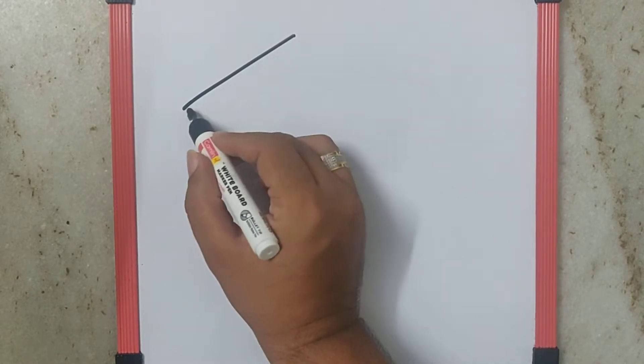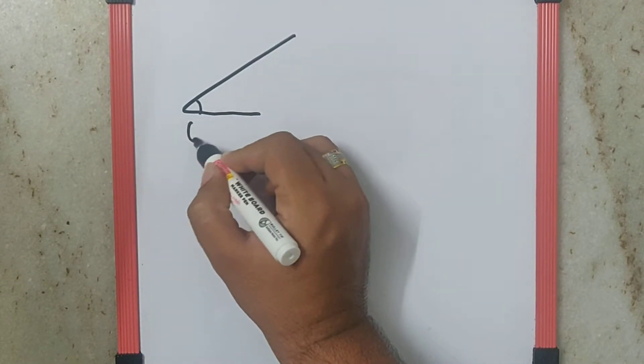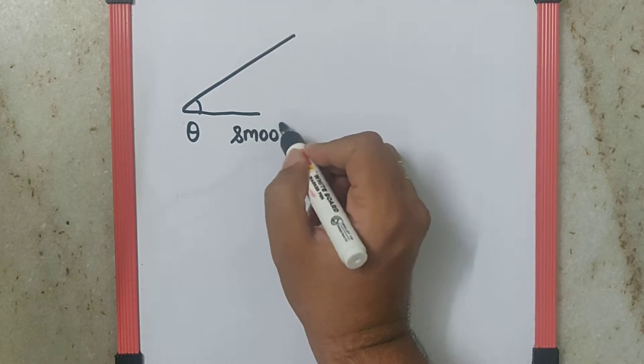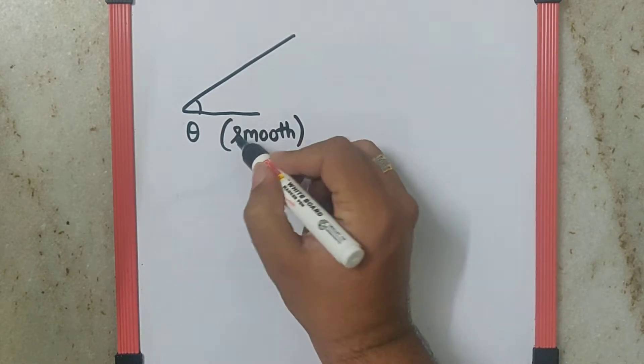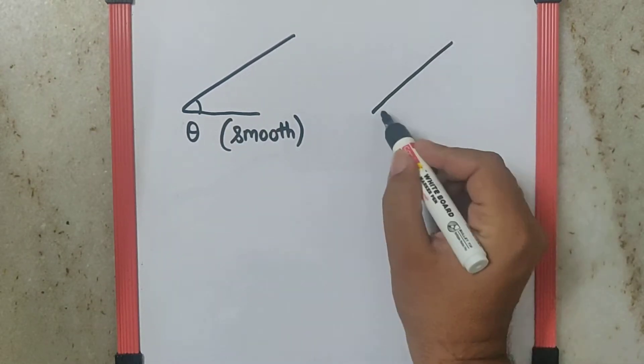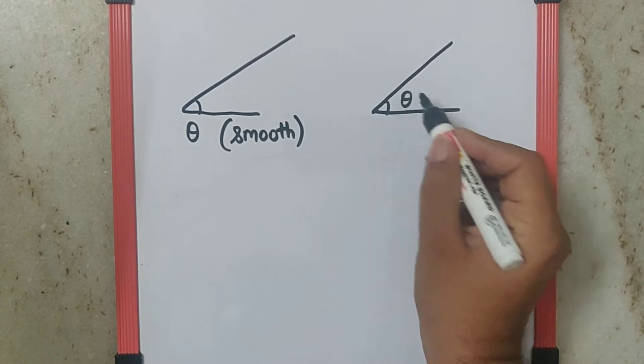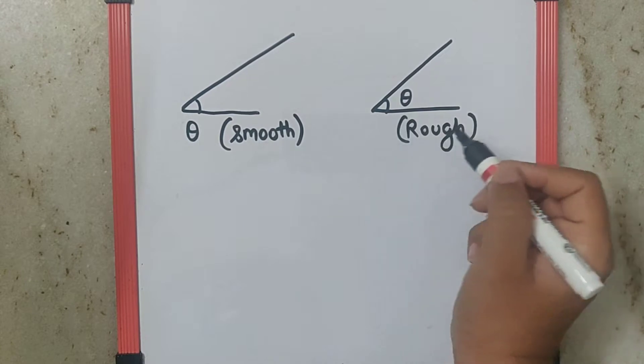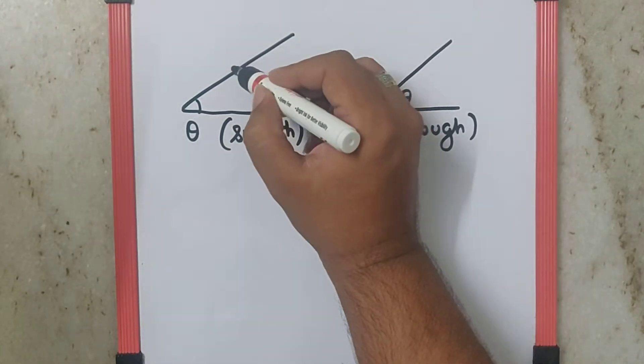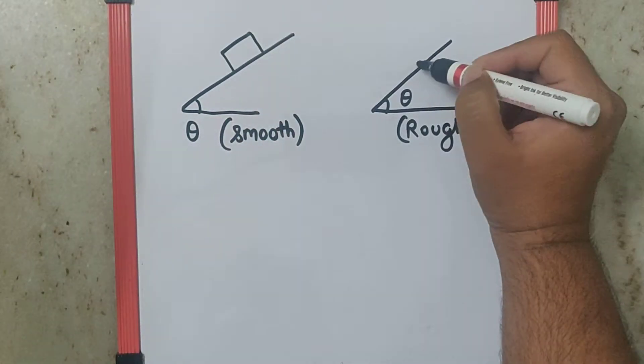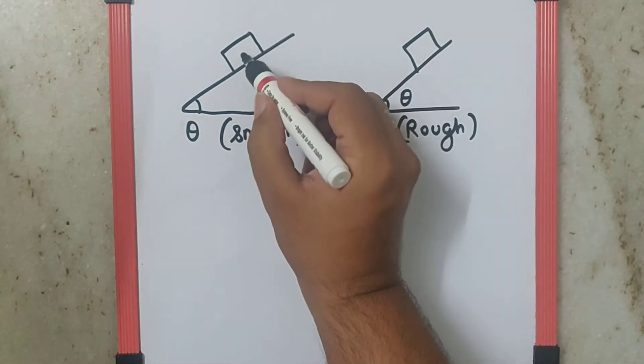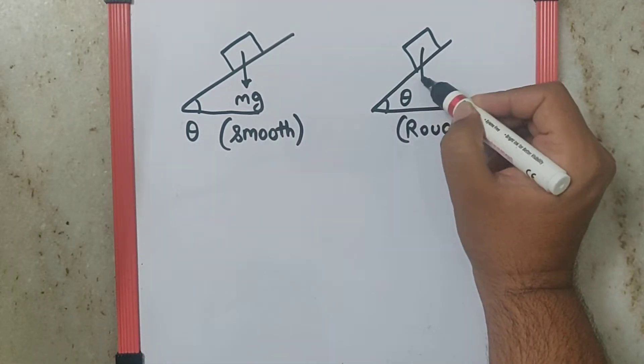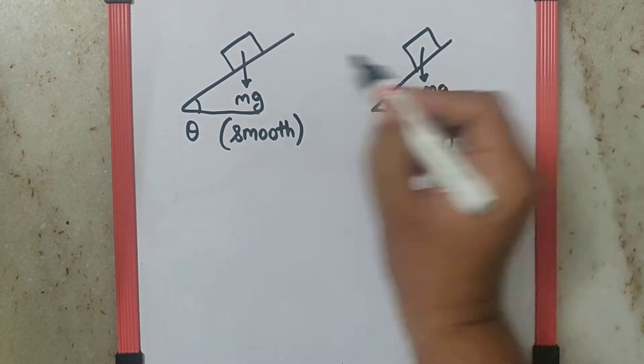If you understand, there are two cases over here. One, the angle is theta but the surface is smooth, whereas the second, the angle is still theta but the surface is rough. Both cases will have almost similar free body diagrams. Over here we'll have mg, the same goes over here.